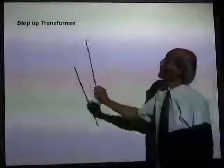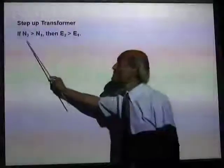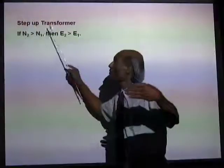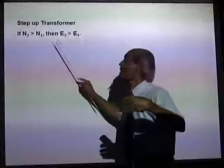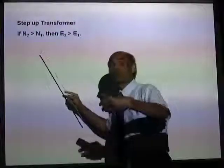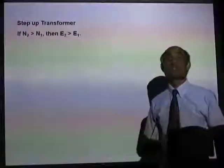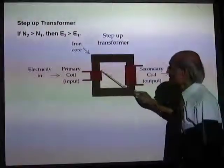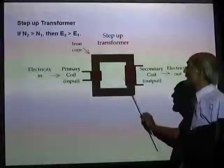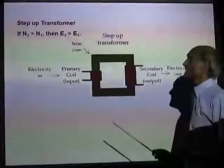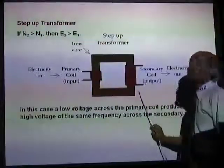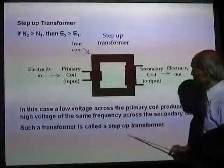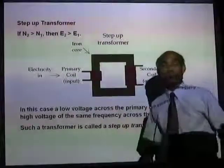For a step-up transformer, the secondary number of windings is greater than the primary number of windings. Then the output voltage will be greater than the input voltage. The secondary coil has a greater number of turns, and you get a bigger output voltage across the secondary. Such a transformer is a step-up transformer — you can use a low voltage AC and obtain a high voltage AC.